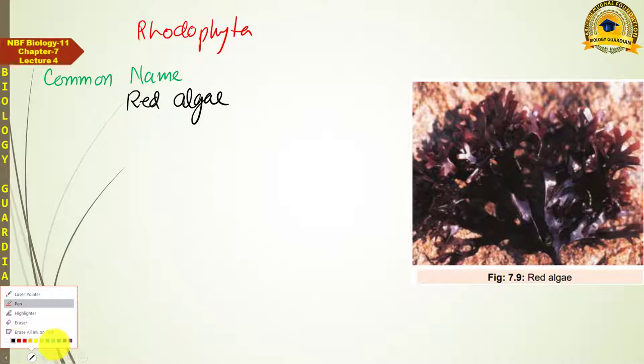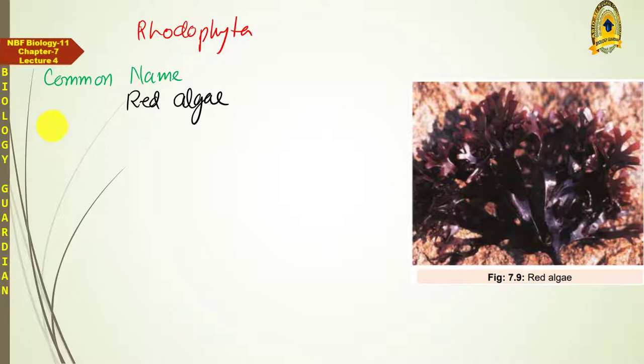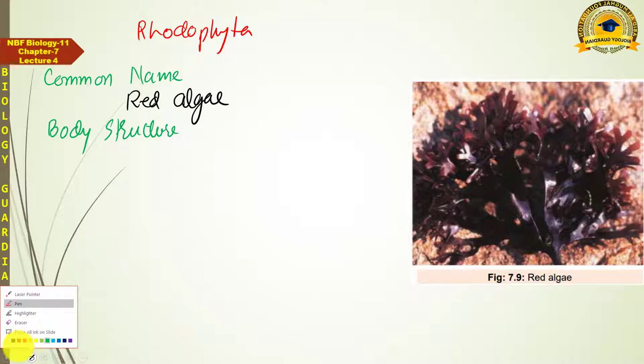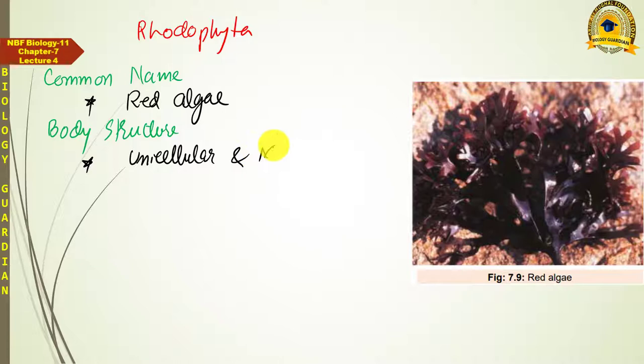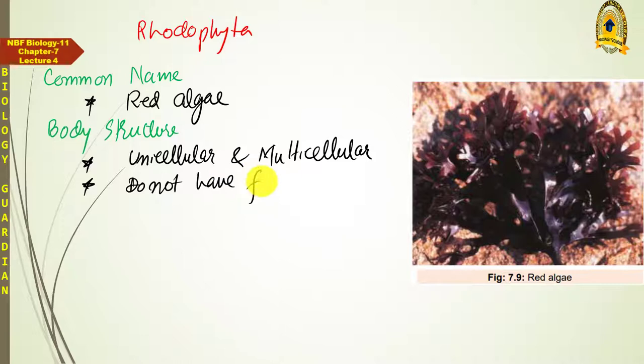The body structure of Red algae includes both unicellular and multicellular forms. The first three groups had unicellular body structures, Phaeophyta was exclusively multicellular, but here both unicellular and multicellular forms are found. Red algae do not have flagella at any stage of their life.